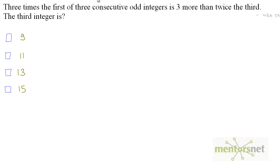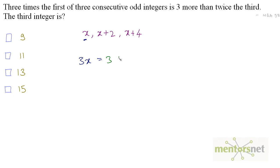Three times the first of three consecutive odd integers is three more than twice the third. What is the third integer? If the first odd integer is x, the next odd integer will be x plus 2, and the next will be x plus 4. Three times the first is 3x, and it equals three more than twice the third: 3 plus 2 times x plus 4.